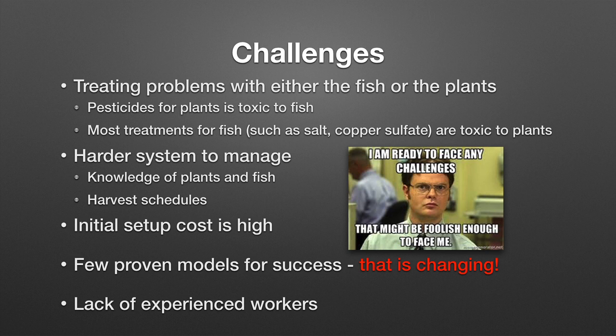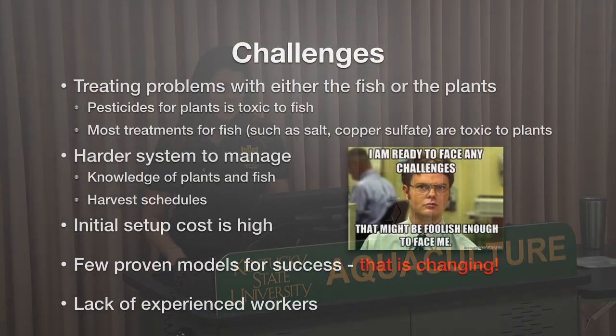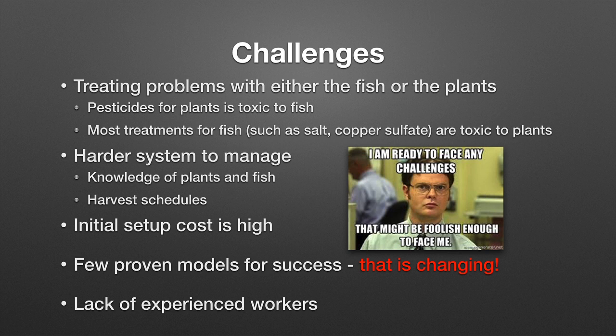With aquaponics systems it becomes a little bit more complicated. You have to have an increased knowledge of both fish and plants, and you have different harvesting schedules. Your fish cycle goes really slowly — you're maybe harvesting only three or four times per year — but your plants go really quickly, every three weeks or even every week depending on how you manage your system. The initial setup cost is pretty high. There's not tons of really great models for success, but over the past five years that's really changing. There's also a lack of experienced workers.